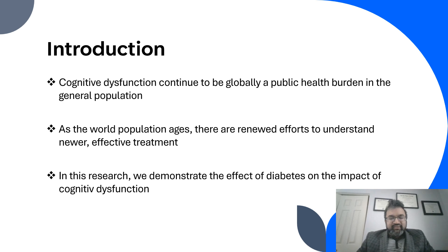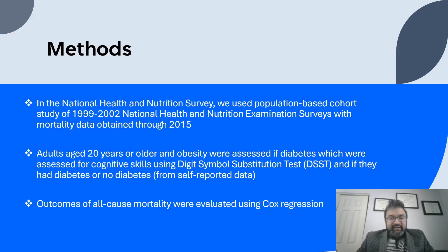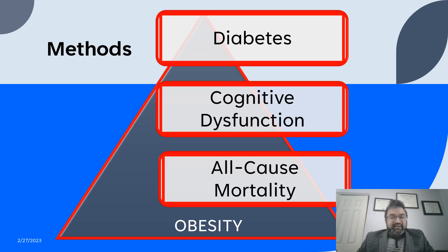In this research, the idea was to demonstrate the effect of diabetes on the impact of cognitive dysfunction. The methodology used the National Health and Nutrition Examination Survey from 1999 to 2002, with follow-up to December 2015. Adults aged 20 years or older were tested using the Digit Symbol Substitution Test. Outcomes of all-cause mortality were evaluated using Cox regression, examining whether diabetes modifies the connection between cognitive dysfunction and all-cause mortality.